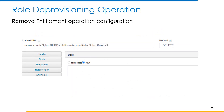The next operation is the role deprovisioning operation. This operation is used to revoke a role from an account in Oracle Fusion. As part of the context URL, we will be passing two attributes: the account's GeoID and role ID. GeoID specifies the GeoID of the user account for which the role is to be revoked, and role ID is the identifier of the role to be revoked.